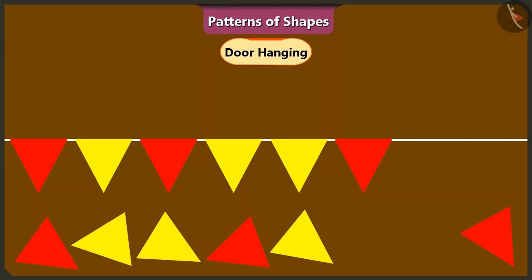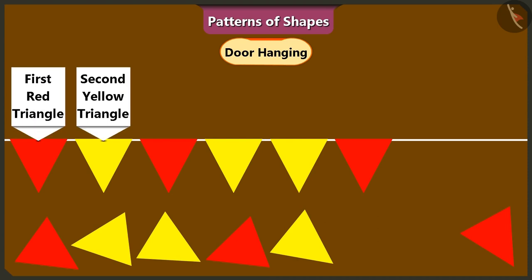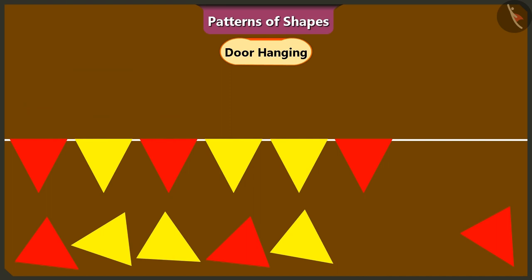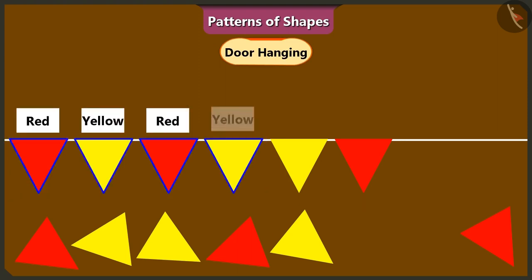Yes. Ma'am, in this toren, first triangle is red and the second triangle is yellow in color. Yes, the third triangle is red in color and the fourth triangle is yellow in color. Both of you are correct. Children, all the shapes in this toren are triangles. Keep in mind the colors of the triangles and repeat the color pattern while making this door hanging or toren.